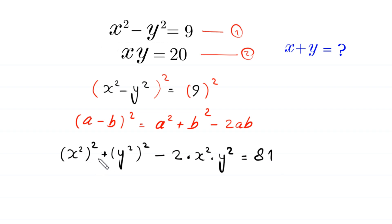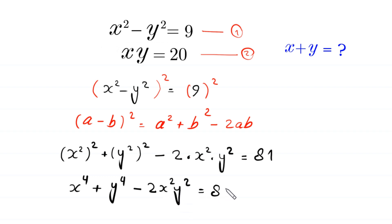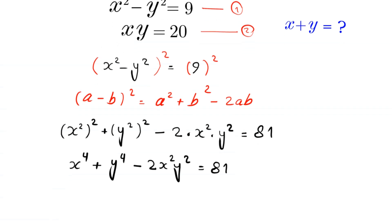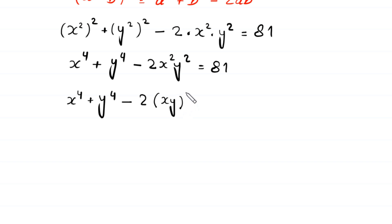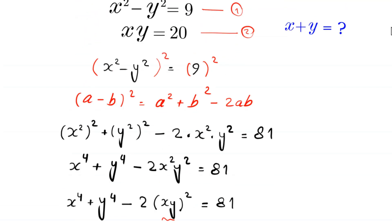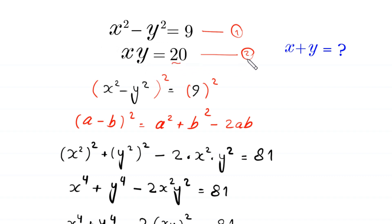Now, x squared whole squared will become x to the power 4, plus y to the power 4, minus 2 x squared y squared is equal to 81. Now, x to the power 4 plus y to the power 4 minus 2 times x squared y squared, which can be written as x y whole squared, is equal to 81. We replace this x y with the value of x y, which is 20, from equation 2.